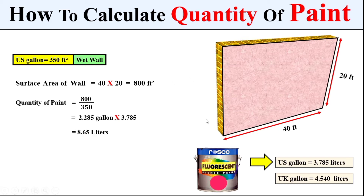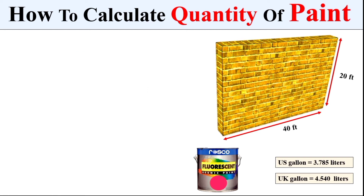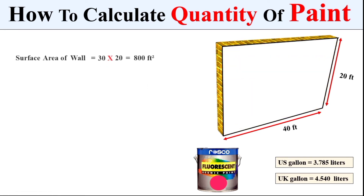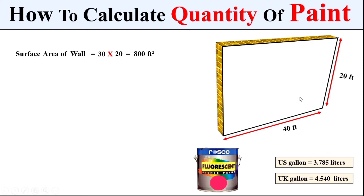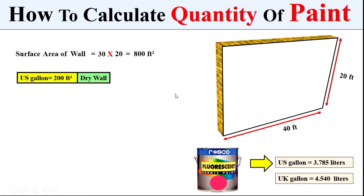Also remember, if the wall is dry and we want to calculate the total quantity of paint, one US gallon can only cover 200 square feet of area. In that condition, we divide the total surface area of the dry wall by 200 — the coverage area of one US gallon.